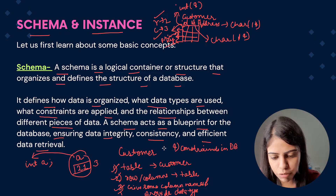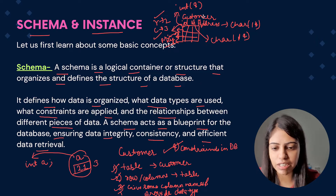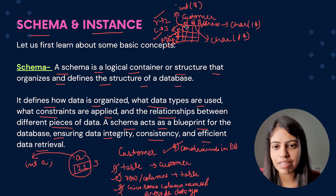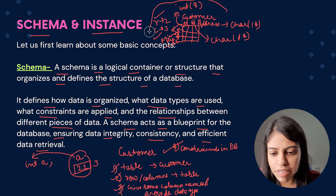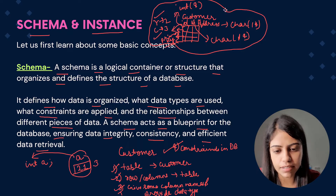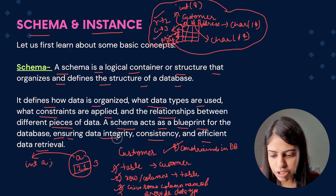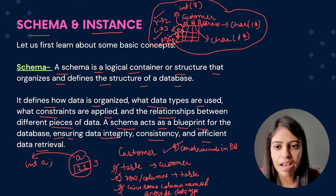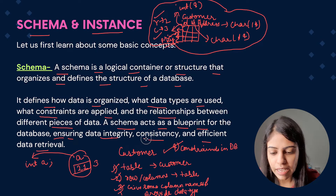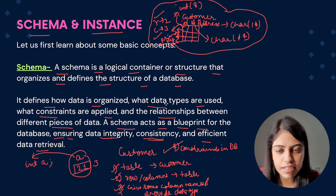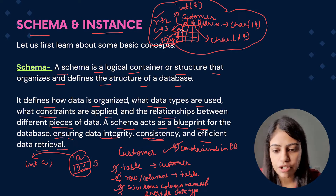So all of these things — data types, constraints like primary key — are defined in this particular schema. In id I can give any value like 1, 2, 3 or 4, 5, 6 — any value of type integer. So basically I am giving a blueprint of my database here. Schema is a blueprint for the database which ensures data integrity, data consistency so there won't be any duplicacy, and efficient data retrieval — so if I have id I can retrieve data for any customer.